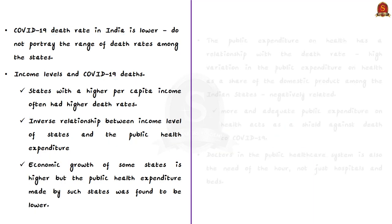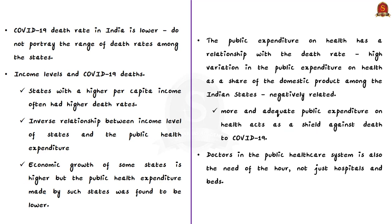It is found that public expenditure on health has a good relationship with the death rate. There is high variation in public expenditure on health as a share of domestic product among Indian states. Public expenditure on health and the death rate are negatively related — the more the public expenditure on health, the lesser is the death rate. In states where public expenditure on health is lesser, the death rates were found to be higher. More adequate public expenditure on health acts as a shield against death due to COVID-19.